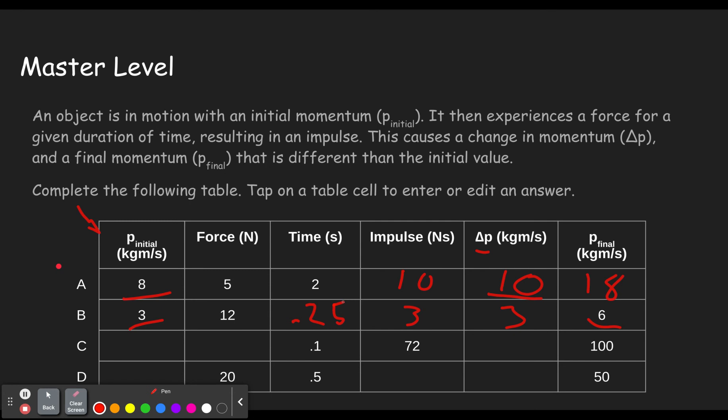So the change in momentum is 72. If we have an impulse of 72 and a time of 0.1, that gives us a force of 720. The initial impulse, if we ended with 100 and we had a change of 72, that means the initial must have been 28. Because if we have 28 and we change by 72, we'll end up with 100.